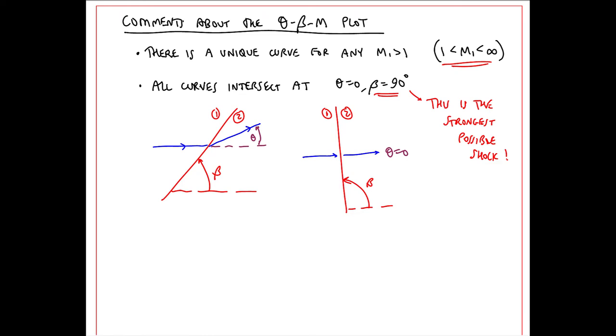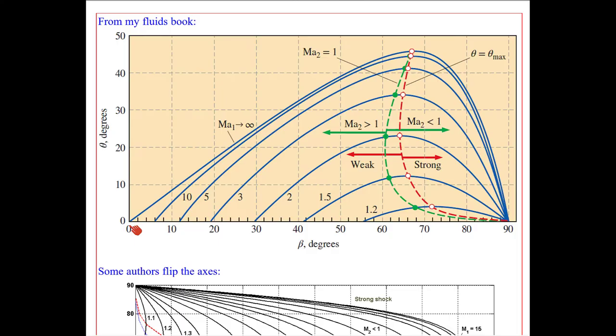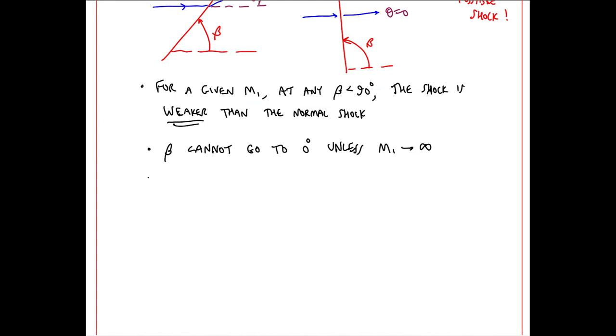This is the strongest possible shock, namely the normal shock. For a given M1, at any beta less than 90 degrees, the shock is weaker than the normal shock. So quantities like pressure jump, temperature jump, would be smaller across this oblique shock than they would be across the normal shock for the same Mach number. Beta cannot go to 0 degrees unless M1 goes to infinity. The minimum beta keeps decreasing until we hit 0, when Mach number goes to infinity. So a corollary to this is that beta min decreases as M1 increases.